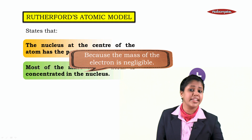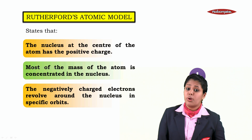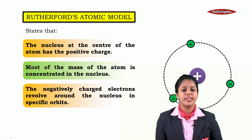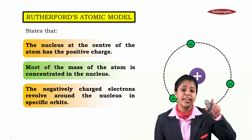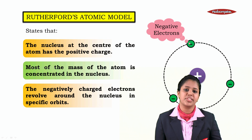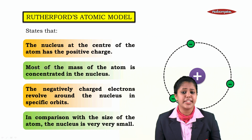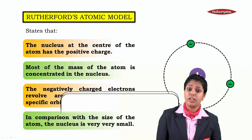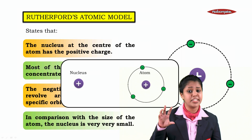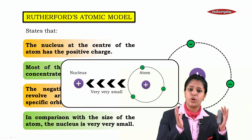The mass of an electron is negligible. The negatively charged electrons revolve around the nucleus in specific orbits. My electrons are revolving in a specific path — that is the orbit. In comparison to the size of an atom, the nucleus is very very small. In comparison to the nucleus which is at the center, the nucleus is very small compared to the whole atom.